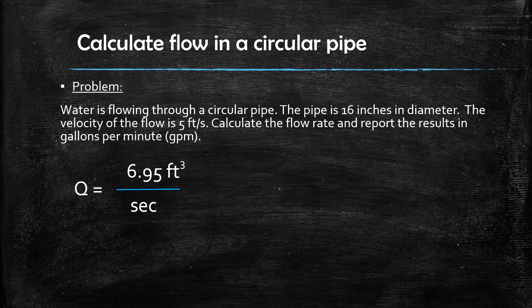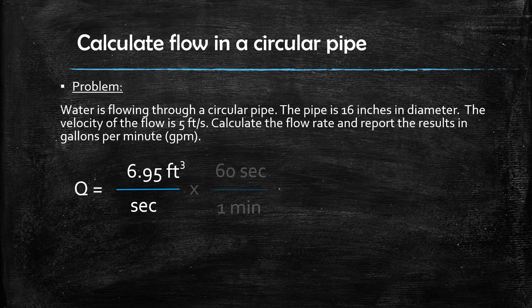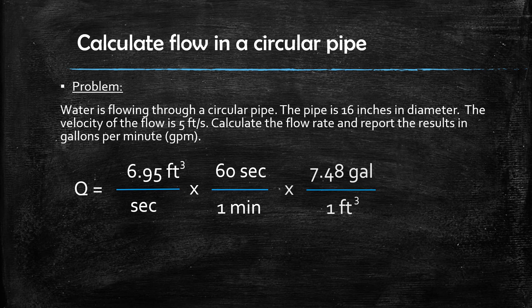The last step to complete the problem is to convert the result that we have from cubic feet per second to gallons per minute. You can accomplish this by taking the result we just calculated, 6.95 cubic feet per second, and multiplying it by 60 seconds per minute and further multiplying it by 7.48 gallons per cubic foot.